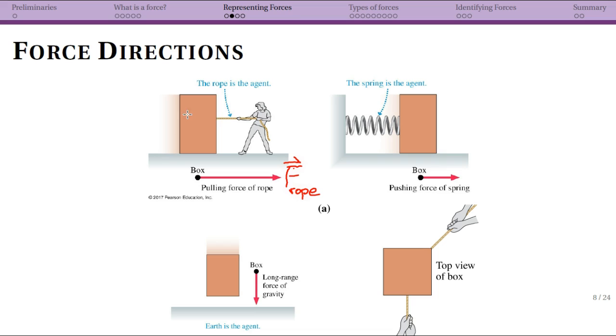Again our object here was the box. One thing to think about is that box probably has gravity acting on it too, but we haven't labeled that here. Eventually we would think about all of the forces, but right now we're thinking about one force at a time.